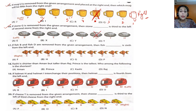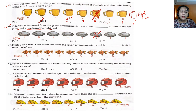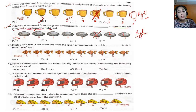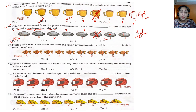Question 16: if stone G is removed from the given arrangement, then stone dash is third to the left of the second stone from the right end. Read from the back: second stone from the right — one, two — that's T. Third to the left of T: since G is already removed, skip it — one, two, three — the answer is E. Option A is the answer.